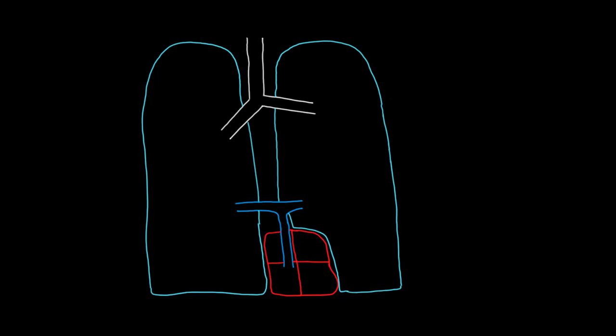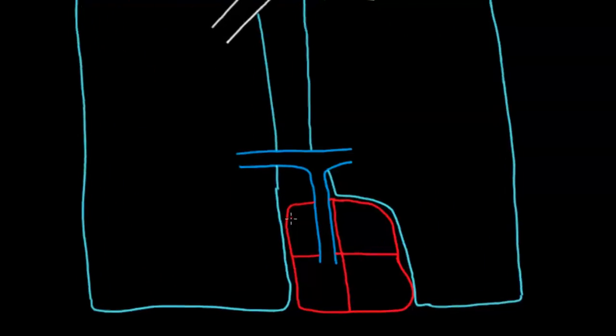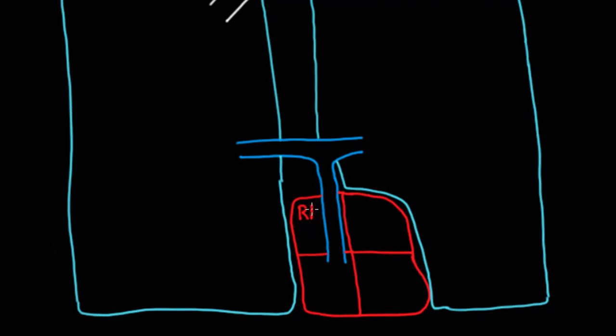I want to start by orienting us to what you see here. We've got a couple of lungs here, the left lung and the right lung. And we have a heart at the bottom. Specifically, I actually divided this up into the four chambers of the heart. I'm going to show you the four chambers. This is the right atrium, this is the right ventricle, then we have the left atrium and the left ventricle.